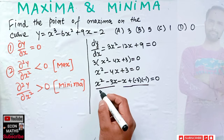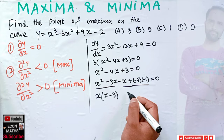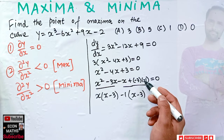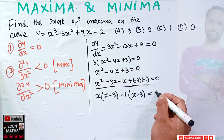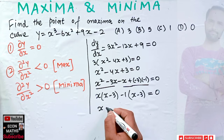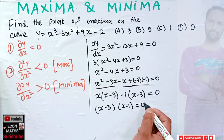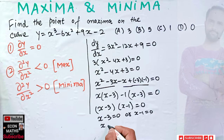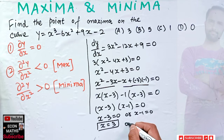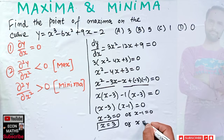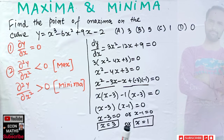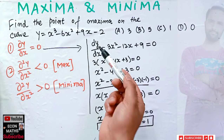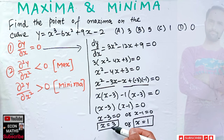Taking common factors, we get (x - 3)(x - 1) = 0. This means either x - 3 = 0 or x - 1 = 0, giving us x = 3 or x = 1. So we got two critical points. Now we have to see which of these two points is maxima and which is minima.